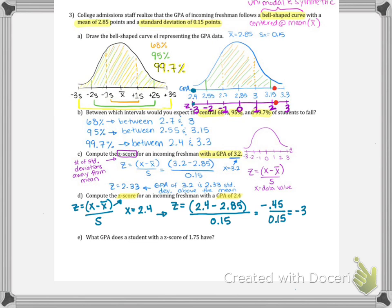Now, part E is actually asking us to walk backwards. So let's see what part E is telling us to do. This time, we are actually asked what GPA does someone have if they have a Z-score of 1.75. So we know that Z is 1.75 and that X bar is 2.85 and S is 0.15. But we have no idea what X is.